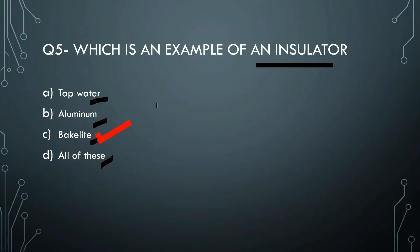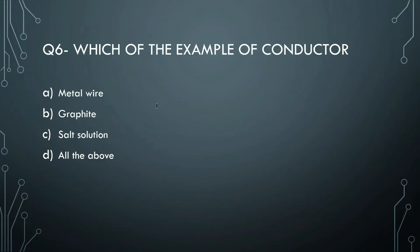Aluminum is a conductor. An example of a conductor: which of the following is an example - metal wire, graphite, salt solution, or all of the above? The right answer is all of the above. Metal wire is a conductor, graphite is a conductor, and salt solution is also a conductor.